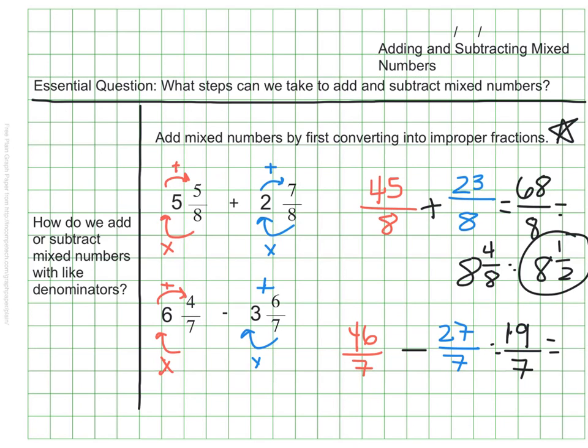Of course, that is leaving me with an improper fraction, so I'm going to go ahead and turn it back into a mixed number, which is 2 and 5 sevenths.